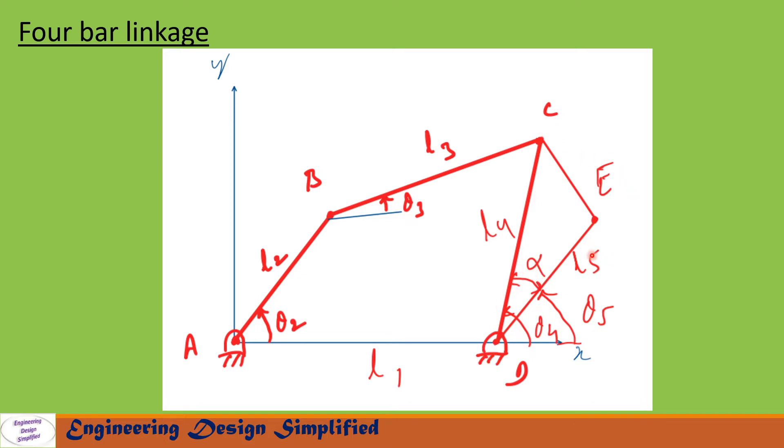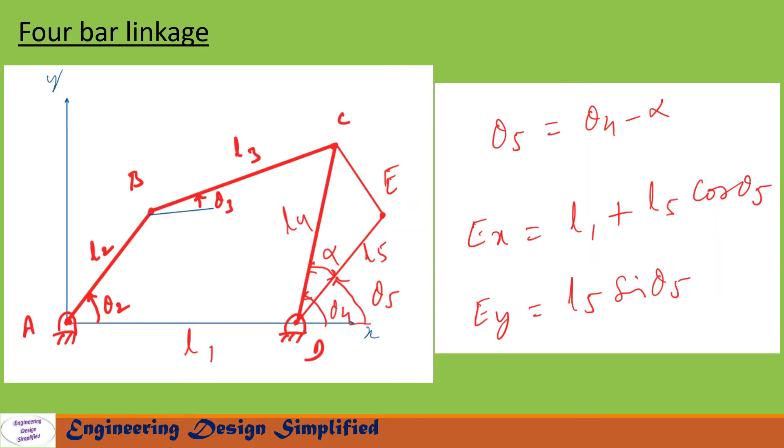In this video, I am going to derive equations to find X and Y positions of this point E and solve a problem using Microsoft Excel. Now, let us call this angle theta5, that is the angle between this link DE and horizontal. Theta5 equal to theta4 minus alpha.